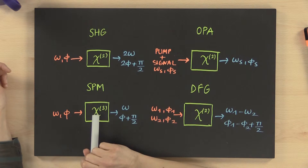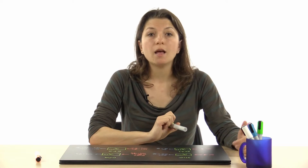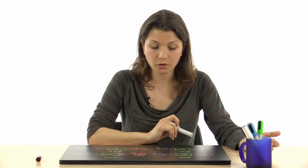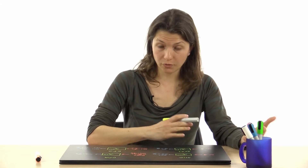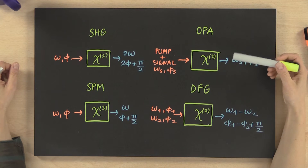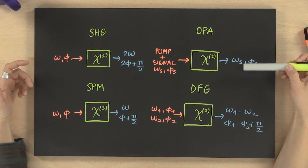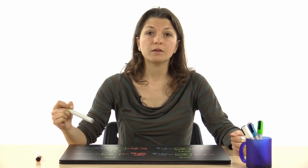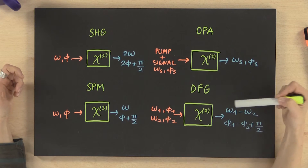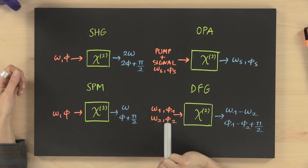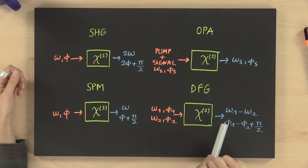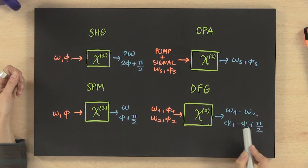From these observations we note: in self-phase modulation, which is important for example in hollow fibre compression or filamentation, there is no effect on the carrier envelope phase. Moreover, we can amplify pulses while preserving CEP stability in optical parametric amplification. Most importantly, difference frequency generation can actually be used to stabilize the CEP. If we perform DFG with two pulses sharing the same carrier envelope phase, the output pulse has a constant carrier envelope phase, meaning fluctuations are cancelled out in the process.